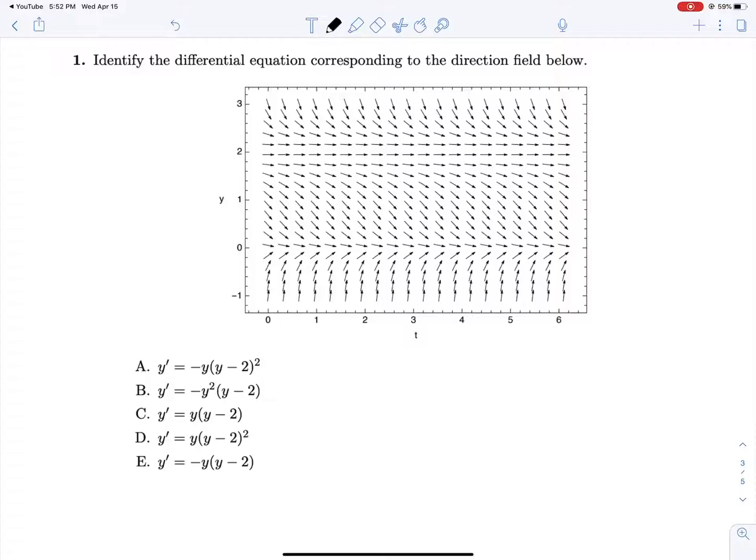One, let's identify the differential equation corresponding to this direction field below. So we see that 2 is an asymptote, 0 is an asymptote. Our derivative is positive coming up to 0, negative down from 2 to 0, and negative like that. Whenever you see the direction of flow not changing around a value, in this case 2, we're going down before it, we're going down after it, that should be a hint that there is a square involved somewhere.